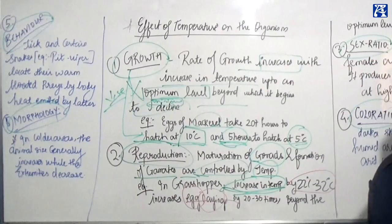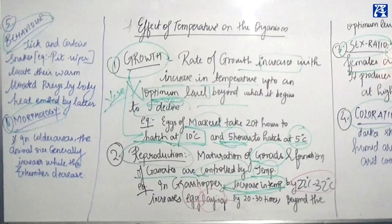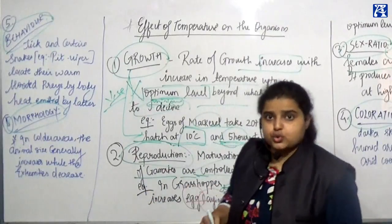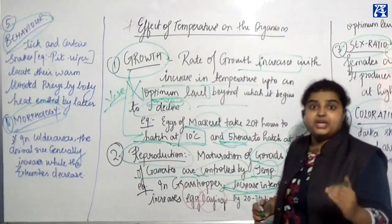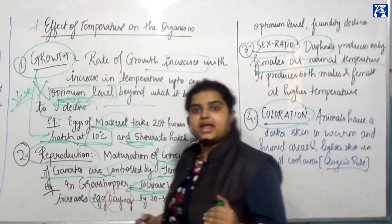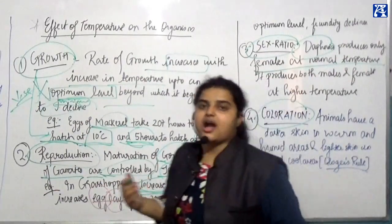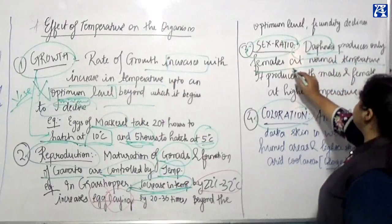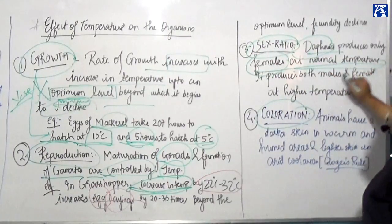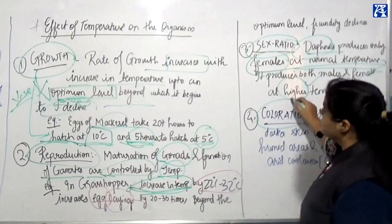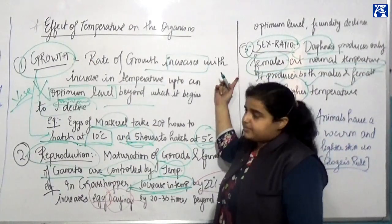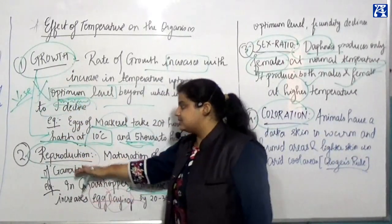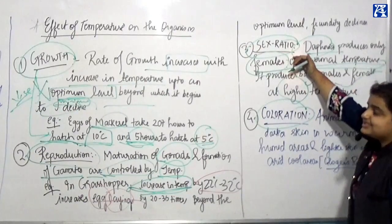Regarding sex ratio: Daphnia produces only females at normal temperature, but produces both males and females at higher temperature. This shows how sex ratio depends on temperature.